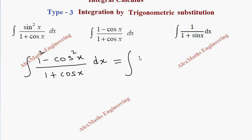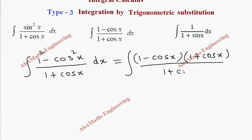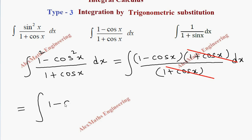The numerator is in the form a squared minus b squared, so we can factor it as (1 minus cos x)(1 plus cos x). Divided by the denominator 1 plus cos x, we can cancel the (1 plus cos x) terms. After cancelling, we have the integral of (1 minus cos x) dx. The integration of 1 is x and the integration of cos x is sin x, so the answer is x minus sin x plus C.